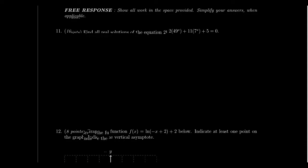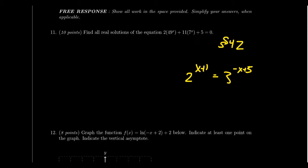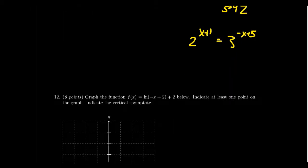Free response question 11, worth 10 points, asks you to solve a more advanced exponential equation from the type covered in lecture 42. This could be an exponential equation in quadratic form, or one with two different bases such as 2^(x+1) = 3^(−x+5). For different bases, use logarithms. Lecture 42 provides good examples of how to handle these more involved cases.